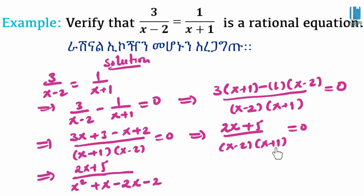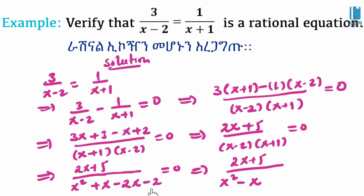The result is 2x plus 5 all over x squared minus x minus 2, equals zero. The numerator is 2x plus 5 and the denominator is x squared minus x minus 2 — so this is a polynomial over polynomial, confirming it is a rational expression equal to zero, which is a rational equation.